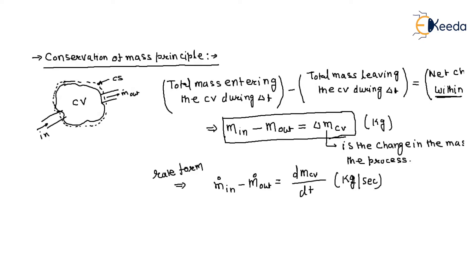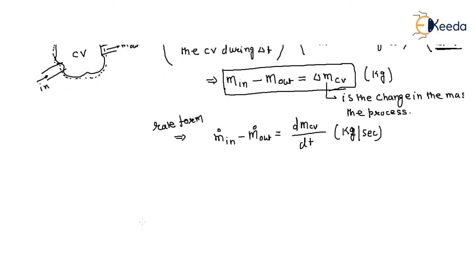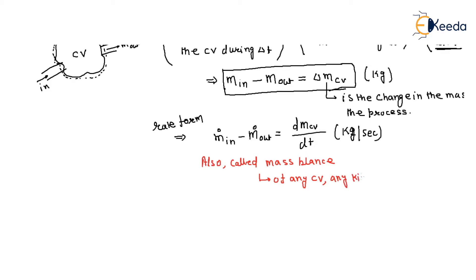These two equations are also called mass balance — of any control volume. That means whether the control volume is moving, stationary, expanding, or contracting — undergoing any kind of process — the mass balance applies to any control volume and any kind of process.